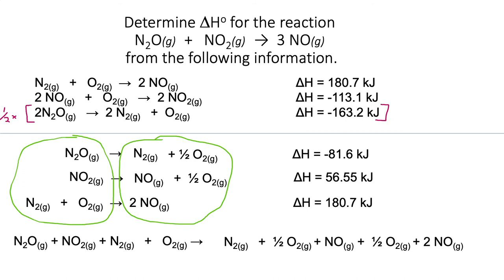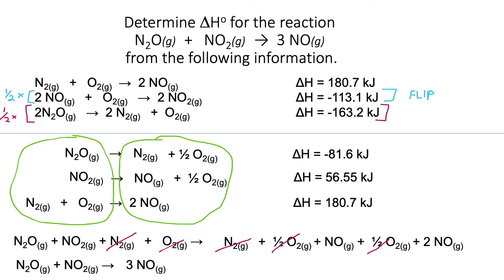Now if we add this all up, we get N2O plus NO2 plus N2 plus O2 in the reactants, and then N2 plus half O2 plus NO plus half O2 plus 2NO in the products. We can cross out our N2s and O2s and combine our NOs. That leaves us with the correct overall reaction.